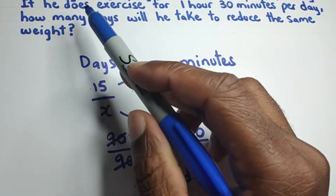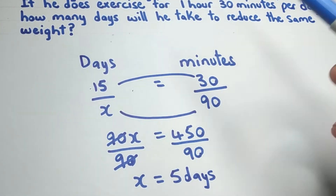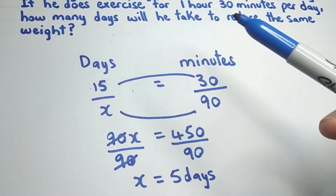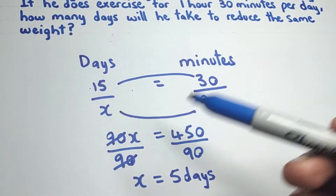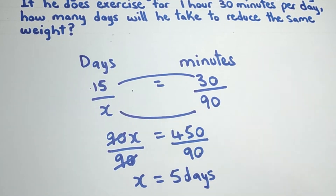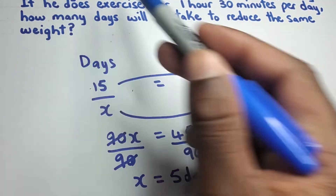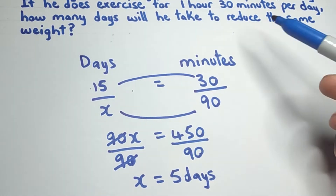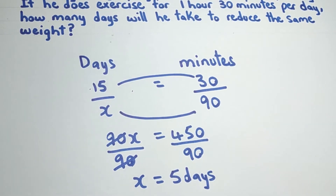That gives us five days. So it will take five days for Alex to lose the 30 kilograms of weight if he exercises for 90 minutes per day. If he increases the time spent exercising, the number of days required decreases — confirming this is an indirect proportional problem. We can write a statement: it will take Alex five days to lose 30 kilograms if he exercises for one and a half hours per day.